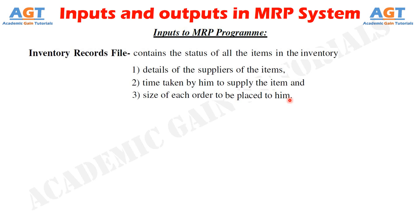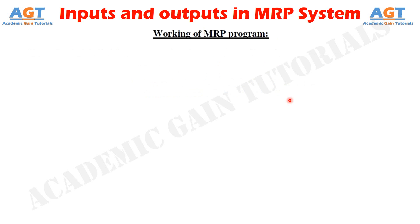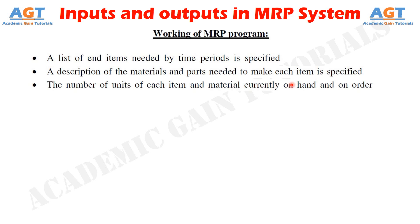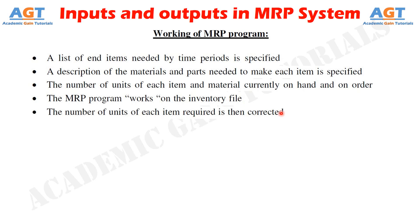After gathering all inputs, the MRP program processes them as follows: the Master Production Schedule specifies a list of end items needed by time period; the Bill of Materials file specifies materials and parts needed to make each item; the inventory file contains the number of units currently on hand and on order. The MRP program works on the inventory file and continuously refers to the BOM file to compute quantities needed. The net requirement is then offset to allow for lead time needed to obtain the material.